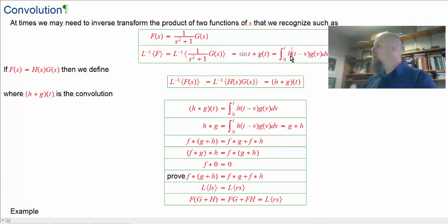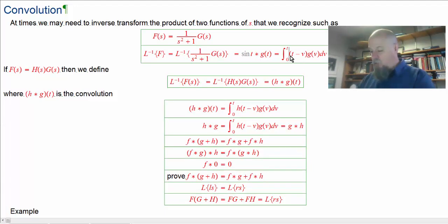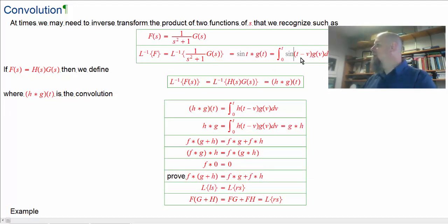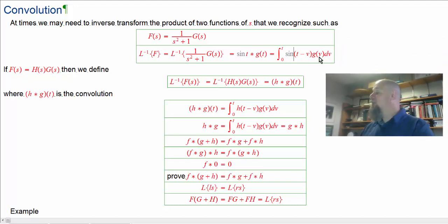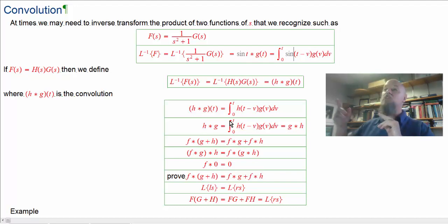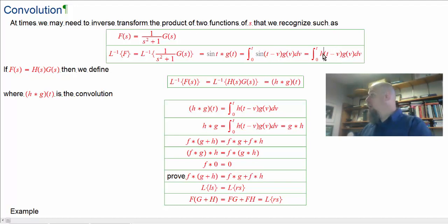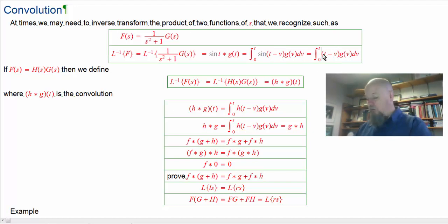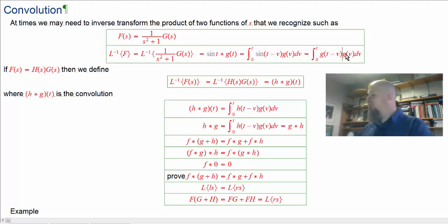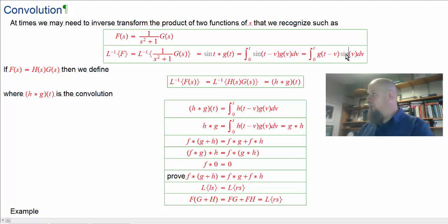Once someone tells me what little g is, I can write the convolution as an integral: the first function evaluated at t minus v, the second function at v, and just do that integral. And since h convoluted with g equals g convoluted with h, I could also write it as g(t minus v) times the second function at v — these give the same thing.